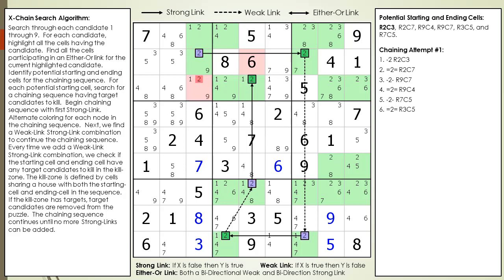So the logic for how the X-chain works can be summarized nicely. Essentially, we end up with having an either-or link relationship between the starting cell and ending cell in the chaining sequence. And since there is a weak link relationship between the starting and ending cell with each target candidate in the kill zone, we must conclude the target candidate in the kill zone is a non-possible candidate.